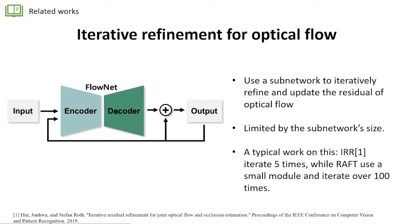Some people say, let's directly treat this problem as an iterative refinement. They use a subnetwork to iteratively refine and update the residual Optical Flow. The output would be the residual between the ground truth flows and the current flow, and you concatenate the current flow to the input and iteratively update your flow. But this kind of method is limited by the subnetwork size. A typical work on this is the iterative residual alignment network, which iterates five times using a small version of FlowNet. RAFT is also an iterative algorithm, but it uses a small and neat module and can iterate over 100 times on the same amount of computation.